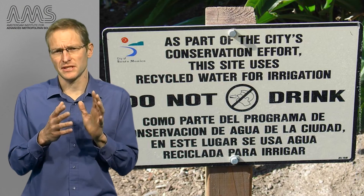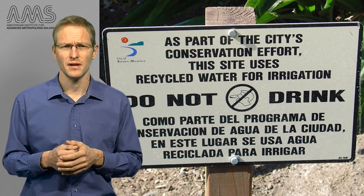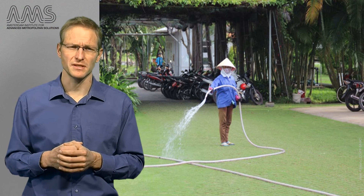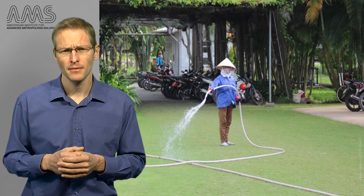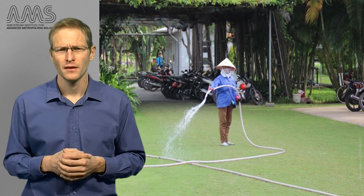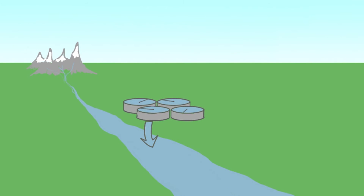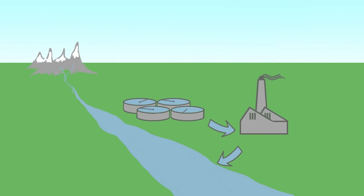Black water — water that contains feces — can of course also be treated and reused for non-potable purposes, like in Santa Monica and Ho Chi Minh City. It is even possible to reuse wastewater for drinking. Most people will have done so via what is called unplanned indirect potable reuse — wastewater is discharged into a river and then used as drinking water further downstream. Then there is planned indirect potable reuse, where wastewater is treated using energy-intensive filtration technologies and deliberately discharged back to the natural environment, from which it is abstracted for drinking water supply.